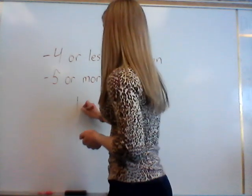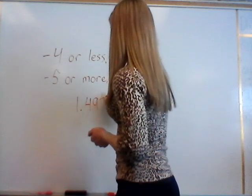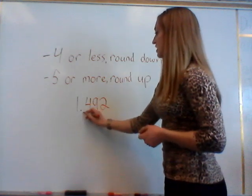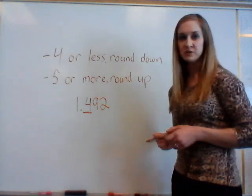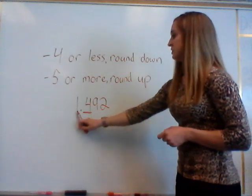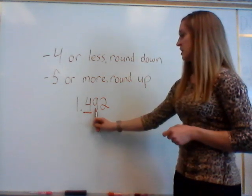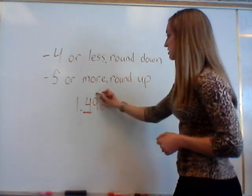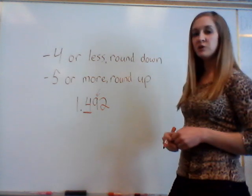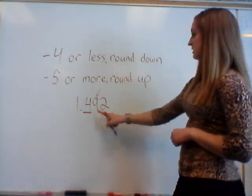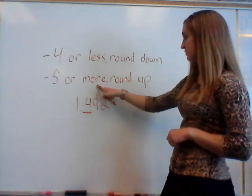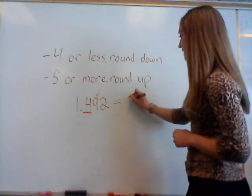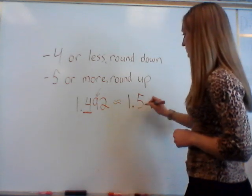For example, if we have one and 492 thousandths and we want to round to the nearest tenth, we should underline the tenths place. We need to remember our decimal place value line here: ones, tenths, hundredths, and thousandths. If we are rounding to the nearest tenth, we look at the digit to the right. In this case we have a nine, and nine is more than five, so we are going to round this up. This becomes one and five tenths.